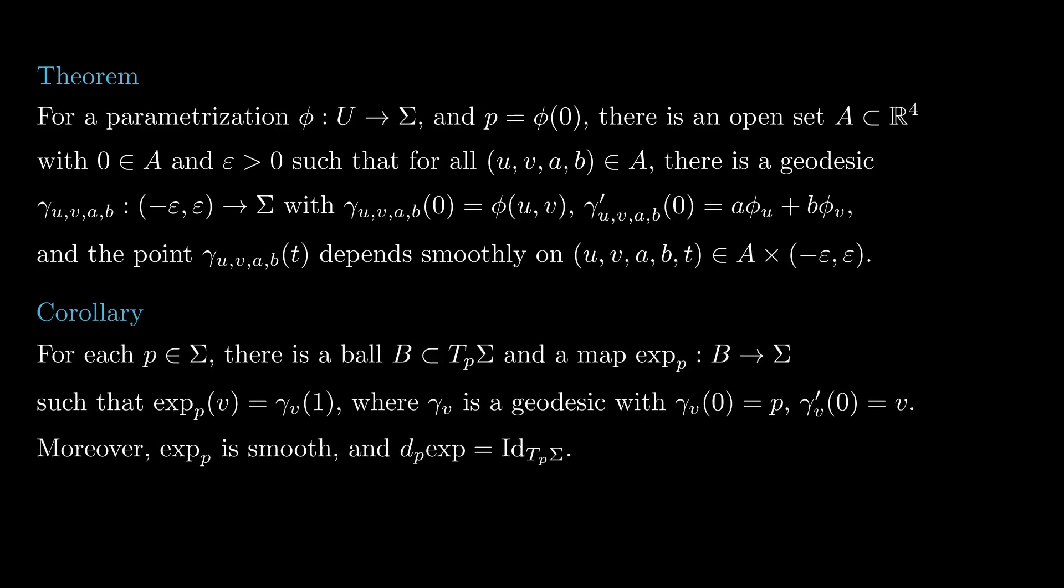Recall that the exponential map is defined as follows. For v in tp sigma, take the geodesic with initial position p and initial velocity v and define x of v to be that geodesic evaluated at time 1. A consequence of this theorem is that there is a ball v in tp sigma centered at 0 for which the exponential map is defined, is smooth, and its derivative at 0 is the identity, so by the inverse function theorem, it is a parametrization if the ball is small enough.